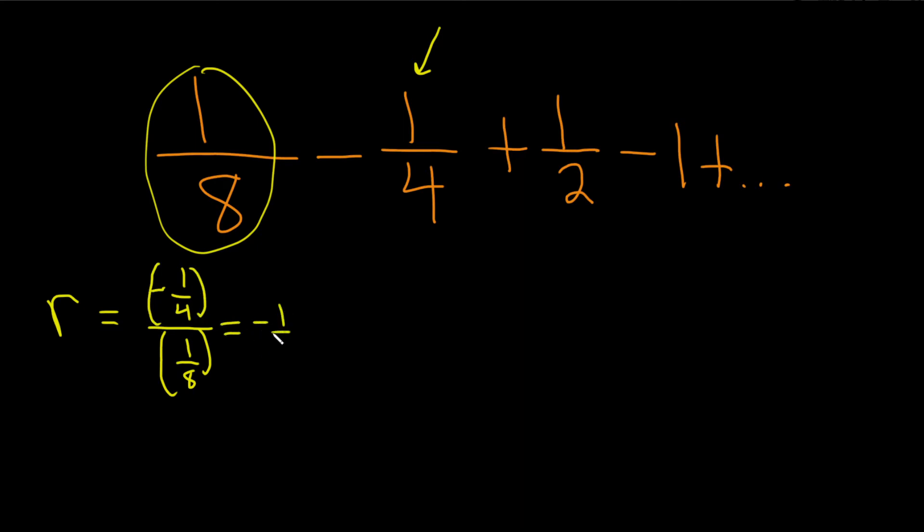So this is negative one fourth, and when you divide by one eighth you really multiply by the reciprocal of one eighth, which is eight over one, and so we see it is negative two. So it wasn't necessary to do this, but you can always just take any number and divide it by the one before it, and that will give you r.